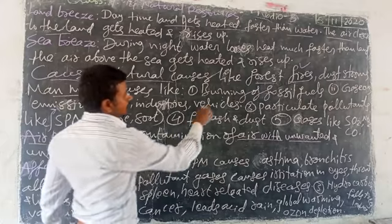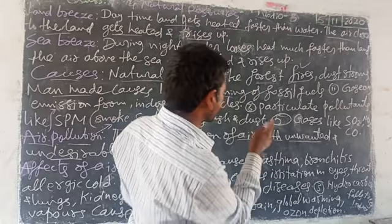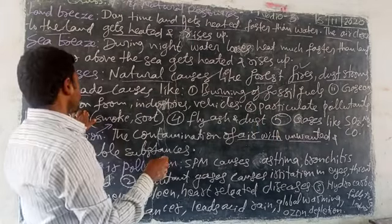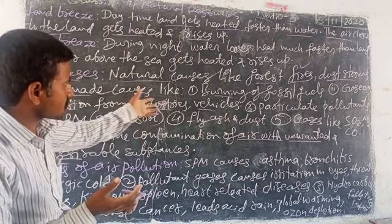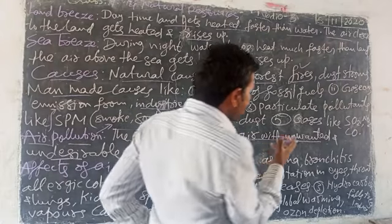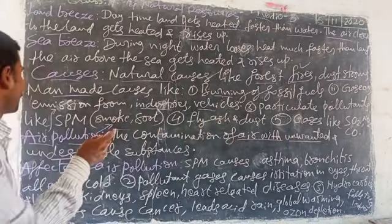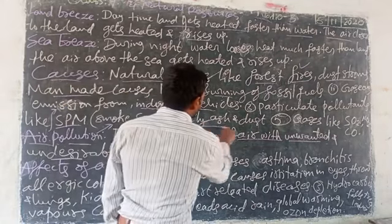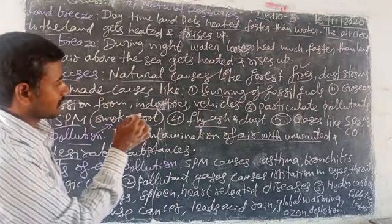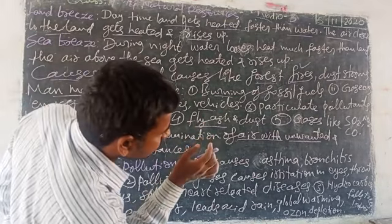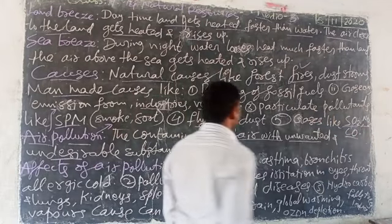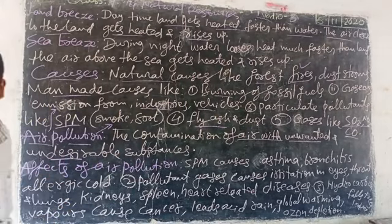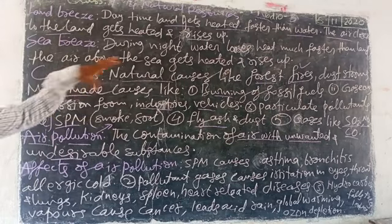Other causes of air pollution include the burning of fossil fuels, gas emissions from industries, smoke, and fly ash. Dust particles also contribute. These are the main causes of air pollution.